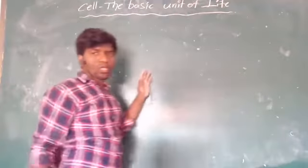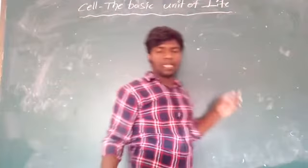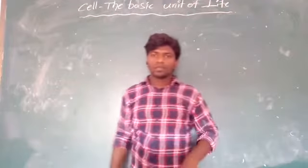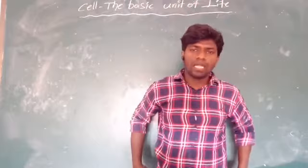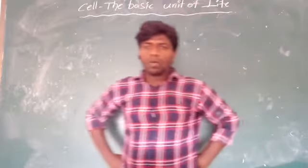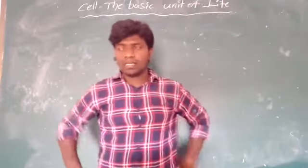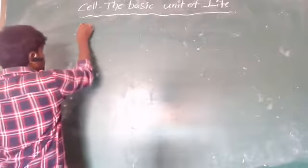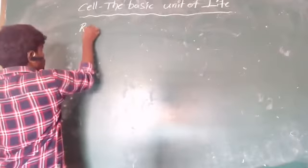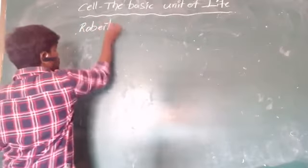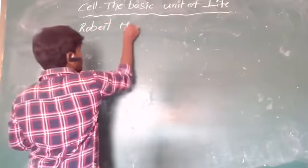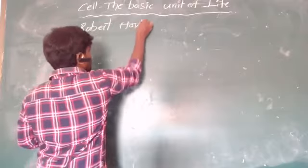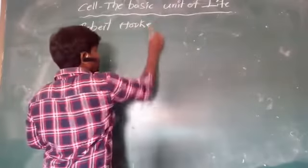Today's topic is: cell is the basic unit of life. So, who discovered the cell for the first time? One scientist — his name is Robert Hooke — discovered the cell.